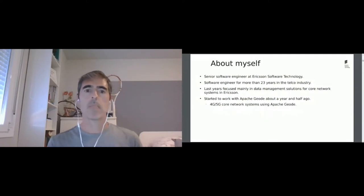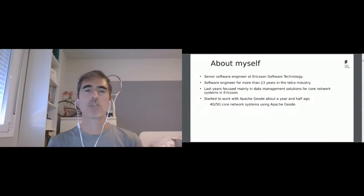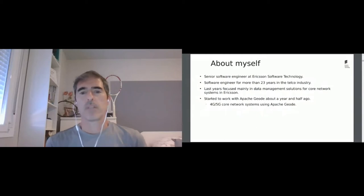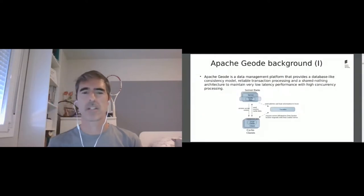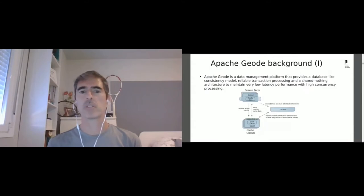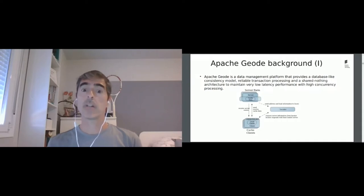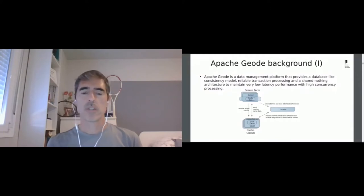Some background about Apache Geode. If you attended the previous presentation, you'd be better off because you already had an introduction. Mine is going to be much shorter, just in case you were not present. So what is Apache Geode? It's hard to define in not so many words. This is what you find on the web page: Apache Geode is a data management platform that provides a database-like consistency model, reliable transaction processing, and a shared-nothing architecture to maintain very low latency performance with high-concurrency processing.